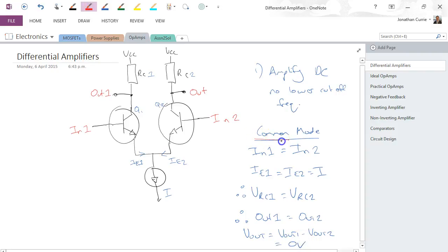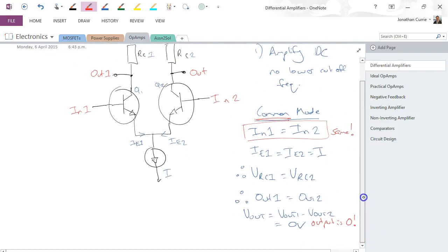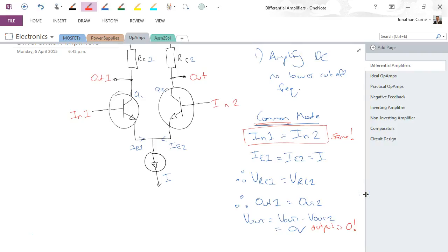So in common mode, the inputs are the same. The output is 0. That's what's known as common mode for our differential amplifier.